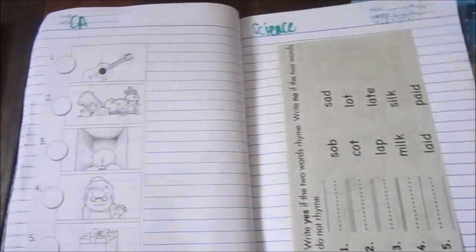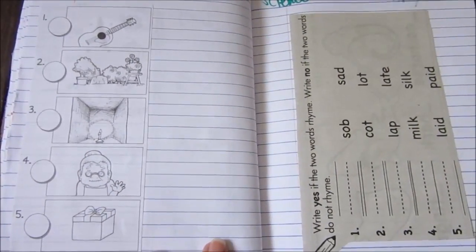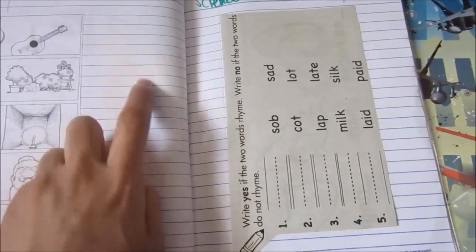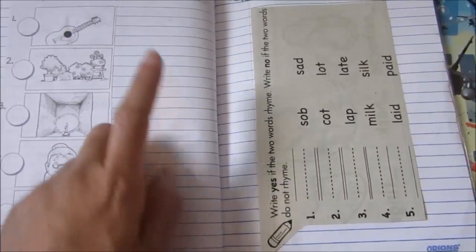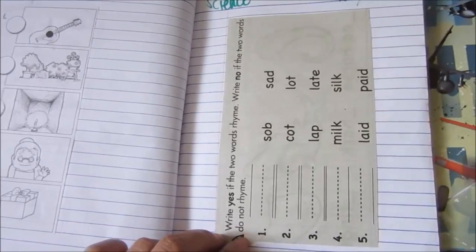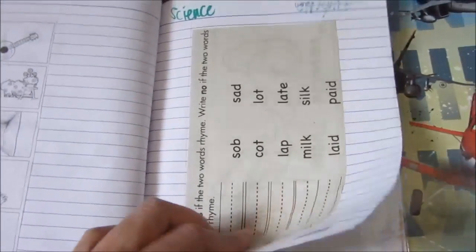So for CA, I think these are more sight words that he will glue. And then rhyming words for science. And then that's the end of this notebook.